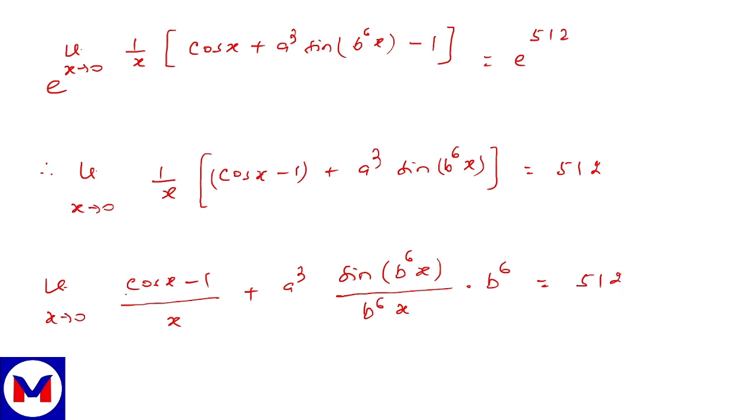The cos x expansion is 1 minus x square by factorial 2. The limit becomes 1 minus x square by factorial 2, x square by factorial 4 minus dot dot dot, minus 1, upon x plus a cube. This becomes 1. Since 1 minus 1 cancel and x cancels, x appears only in numerator which becomes 0. So we get a cube b to the power 6 equals 512.